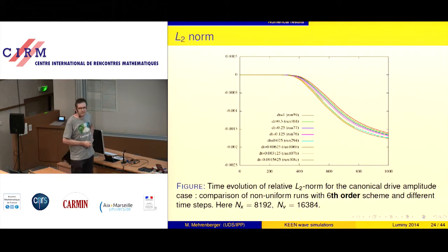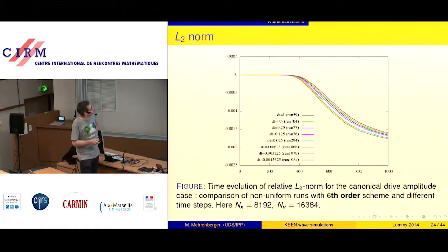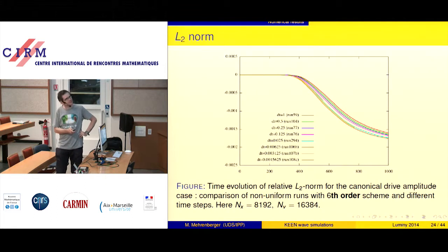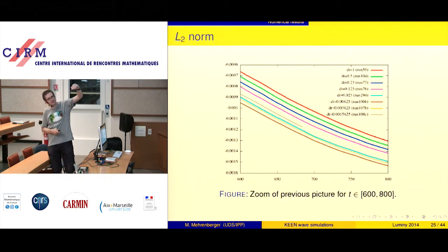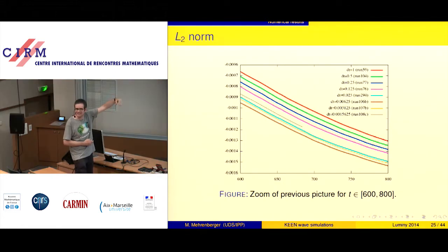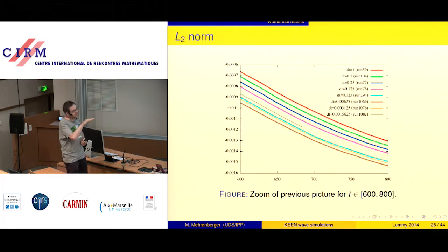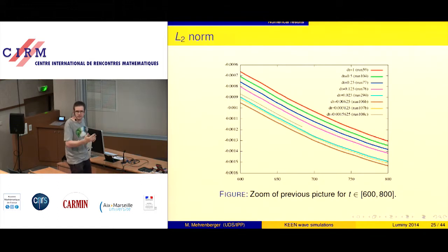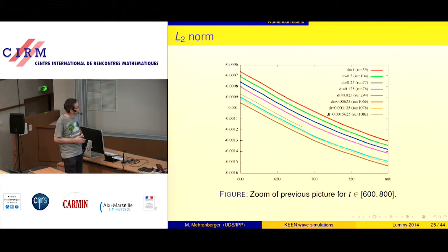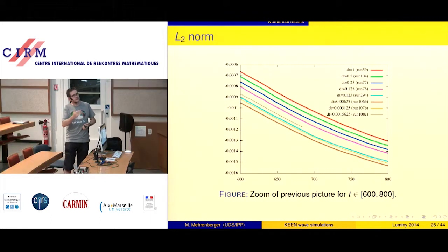Repeating the study with the sixth-order scheme: as we decrease delta-T, the L2 norm first decreases but then can even increase. This is because at the limit, the L2 norm in the fully discrete scheme approaches the semi-discrete scheme (discretization in phase space only). This means the L2 norm error does not always decrease monotonically with delta-T.